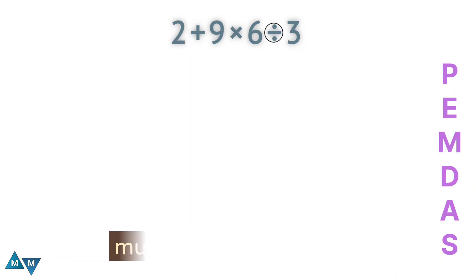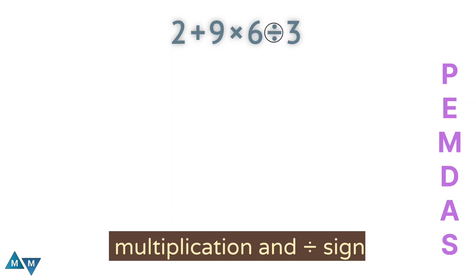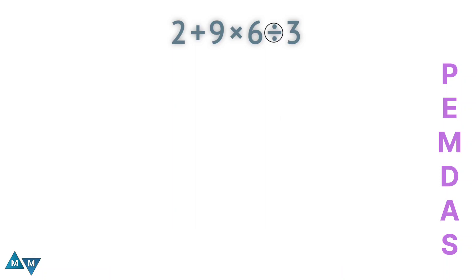And further, since there are multiplication and division signs, both signs have the same priority. So what do I see first? From moving left to right, in this case I see multiplication first. So this is what I have to do first.